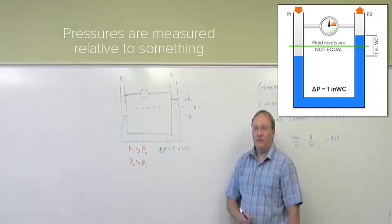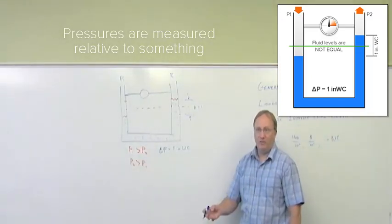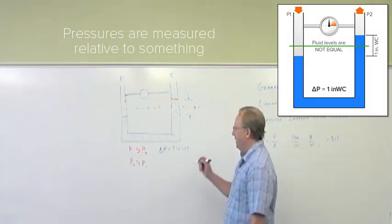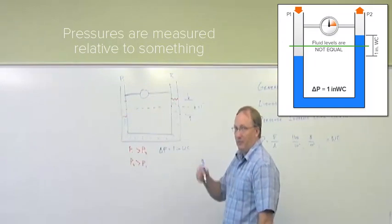Pressures are measured relative to something. And, that could be measured to zero, which would be an absolute pressure or a gauge pressure. Gauge pressure is relative. Absolute pressure is compared to zero.